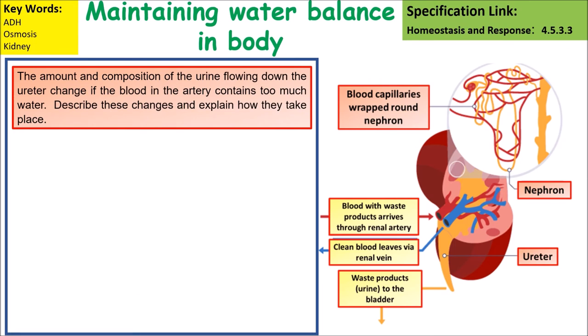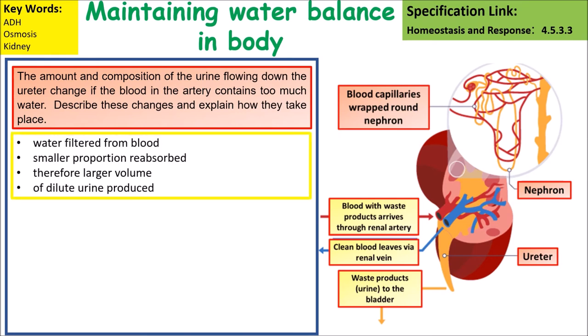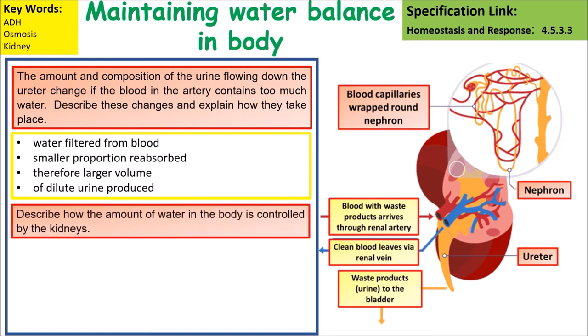If the blood in the artery contains too much water, the amount and composition of urine changes. The key points are: water is filtered from the blood, a smaller proportion is reabsorbed, and therefore you would end up with a larger volume of urine that is more dilute.